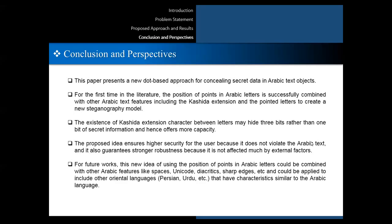In conclusion, for the first time in the literature, the position of points in Arabic letters is combined with other Arabic text features including the Keshida extension and pointed letters to create a new model. The proposed idea may hide 3 bits rather than 1 bit of secret information, and hence offers more capacity. It also ensures higher security because it does not violate the Arabic text, and guarantees stronger robustness because it is not affected much by external factors. For future work, this new idea of using the position of points in Arabic letters could be combined with other Arabic features and applied to other oriental languages with similar characteristics, such as Persian and Urdu.